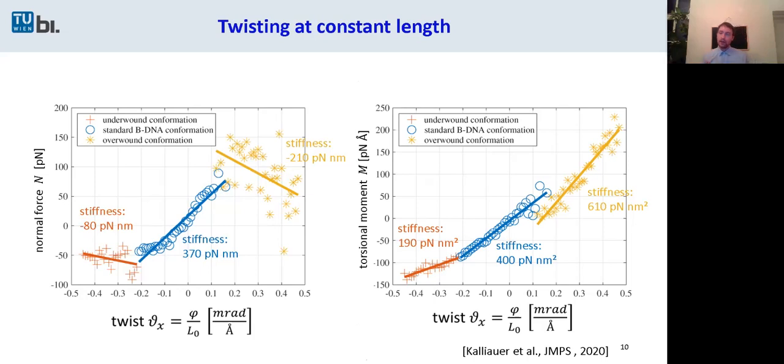On the other hand, if you have a twist, we get a positive twisting stiffness for all three conformations.